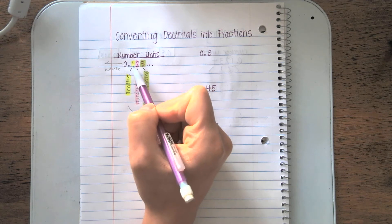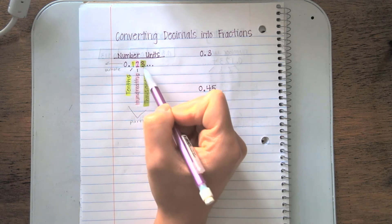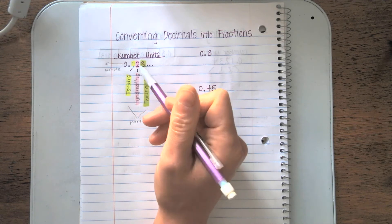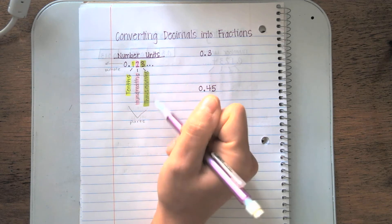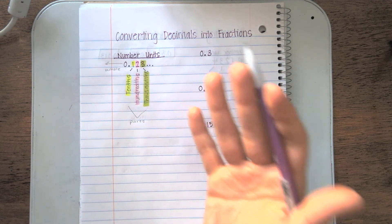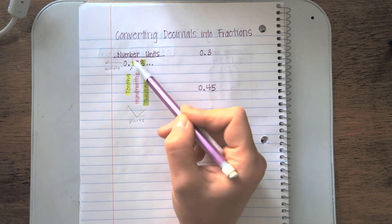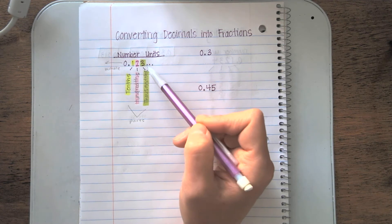One unit to the right of my decimal is tenths. Two units to the right is hundredths. And three units to the right is thousandths. If we kept going on, it would keep going on and on. But today we're going to focus on three units at most to the right.